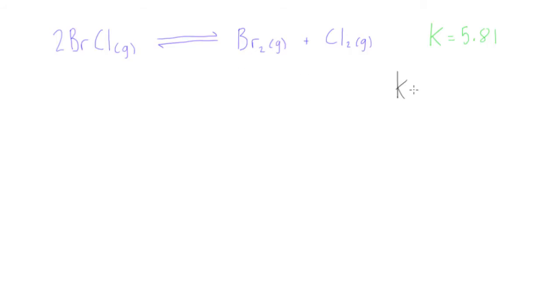In order to do that, we need to write the equilibrium expression. K, the equilibrium constant, is going to be equal to the concentrations of the products over the concentrations of the reactants. So we can write it like this: K equals concentration of bromine Br2 times concentration of chlorine Cl2 over the concentration of bromine monochloride BrCl. And because this is a 2 in front of it in the stoichiometric coefficient, we're going to have to raise this to the power of 2.